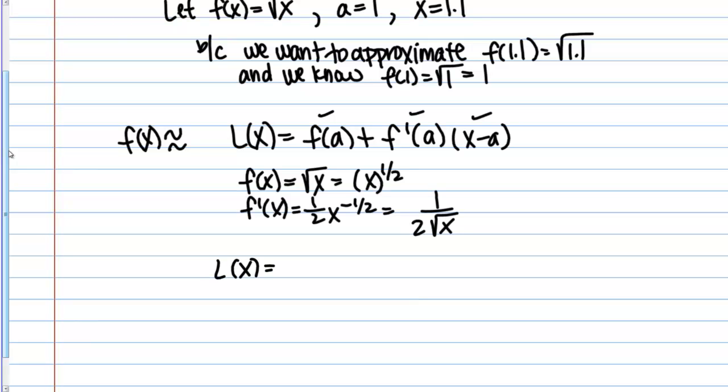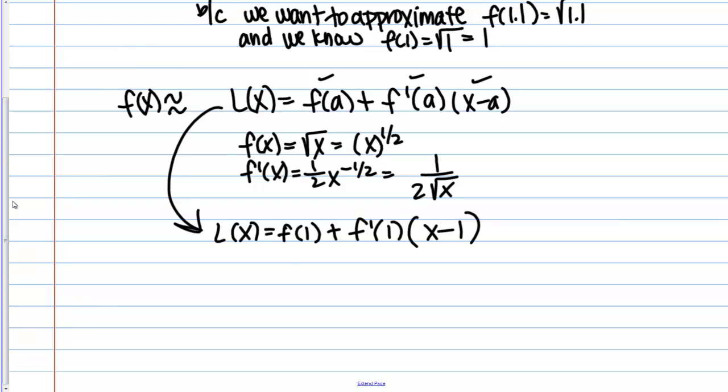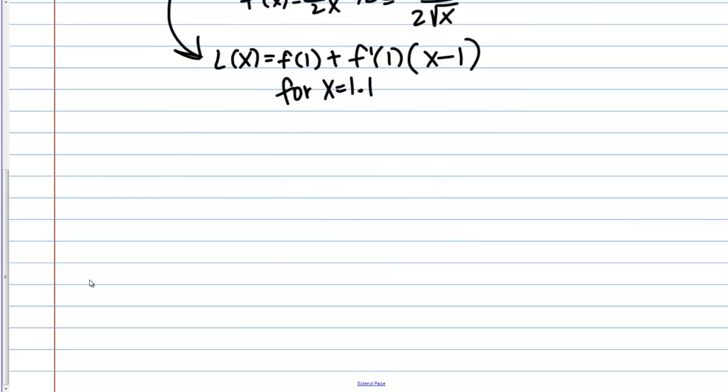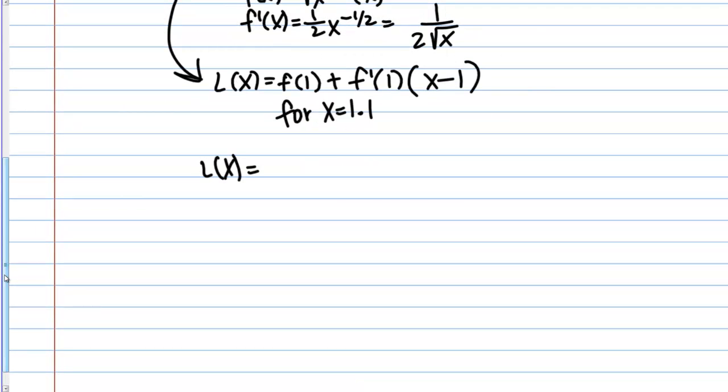L of X equals F of A. We said A equals 1, so this is going to be the square root of 1. Actually, let me back up a step and write out one more line here. This is going to be F of 1 plus F prime of 1 times X minus 1. I'm just plugging in our function and the fact that we're evaluating this at A equals 1. We want to do this for X equals 1.1 because we are trying to evaluate the square root of 1.1. Now, let's actually plug in what each of these things is. F of 1 is the square root of 1 plus F prime of 1. We said the derivative was 1 over 2 root X. This is going to be 1 over 2 square root of 1.